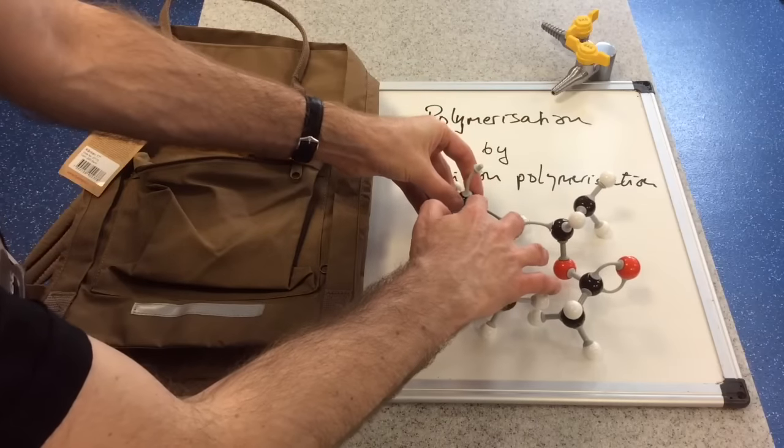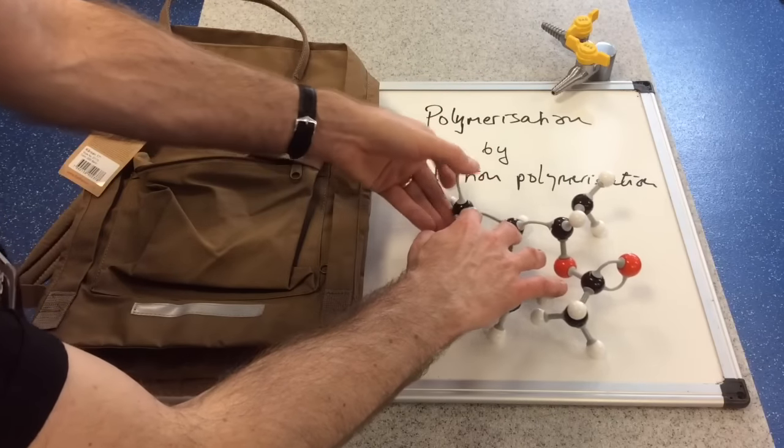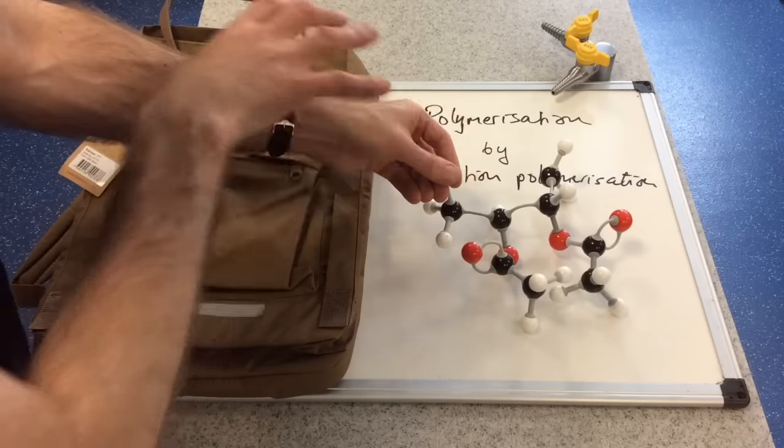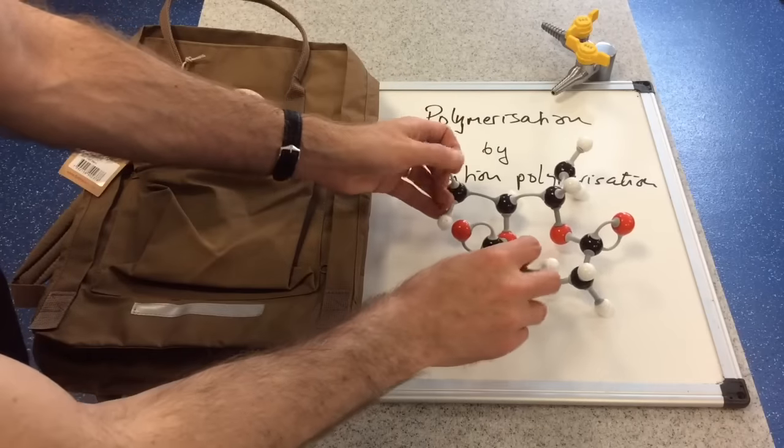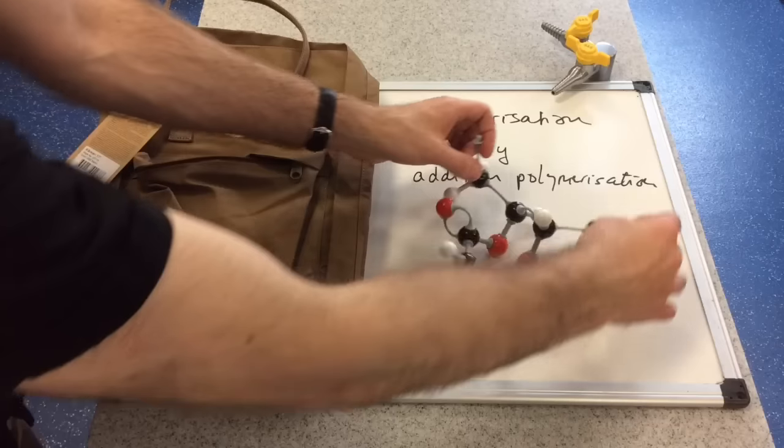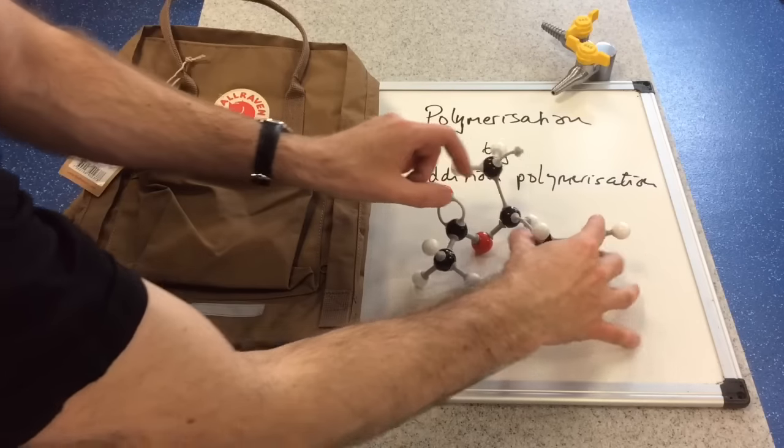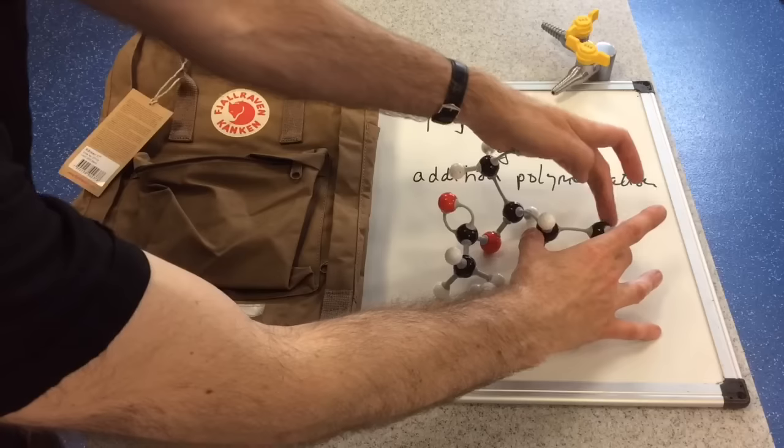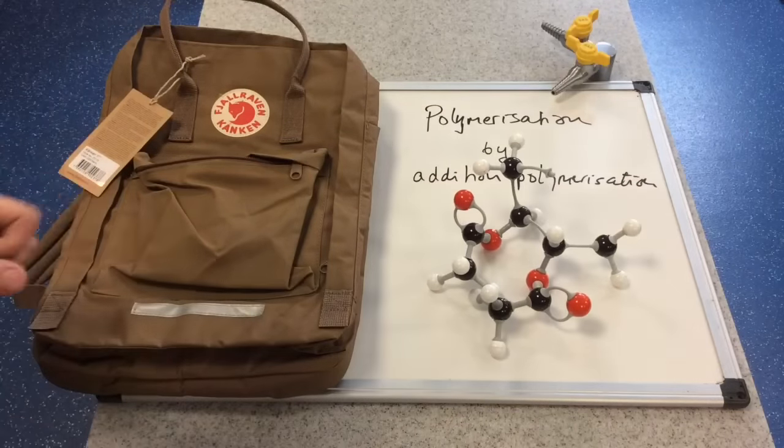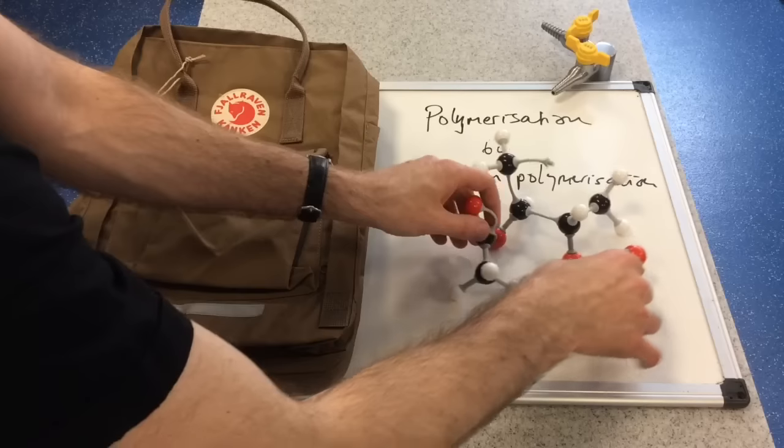And so this bit I'm holding here is the bond on this side that could accept another one of those monomers once its double bond's opened up. And on this side here, this is the other double bond here from the other molecule. And there's a gap there, so obviously another monomer could come in at that side and start to form this long chain.